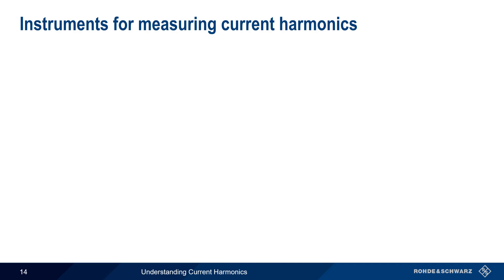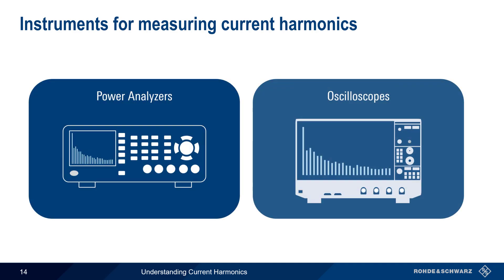There are two main classes of instruments that can be used to measure current harmonics and total harmonic distortion, power analyzers and oscilloscopes. Let's take a brief look at each of these types of instruments and how they are used to measure current harmonics.